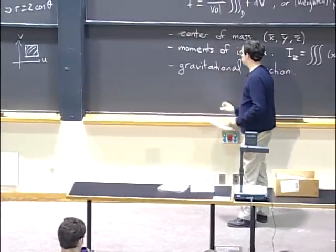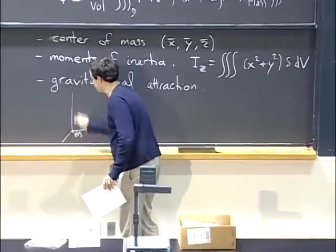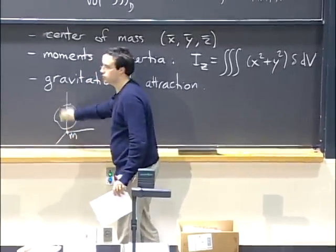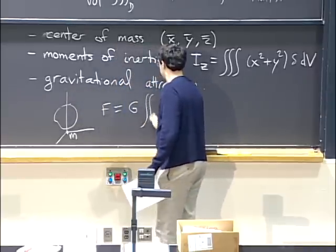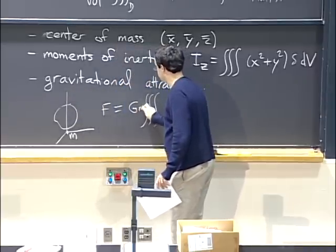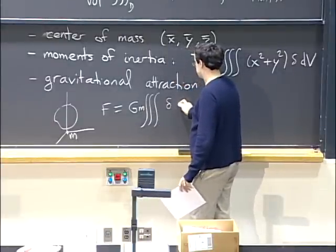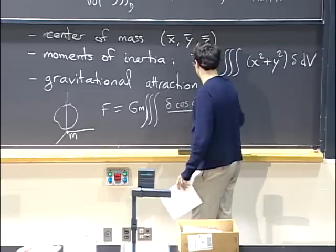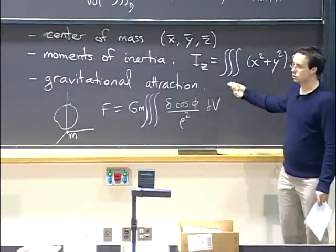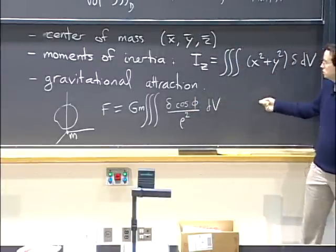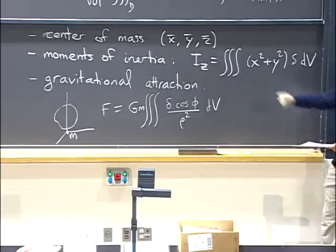The gravitational attraction formula: if you have a point mass at the origin and some solid centered on the z-axis attracting it, then the force is G·m × ∭ (density · cosφ / ρ²) dV, which you evaluate in spherical coordinates because it's easier that way.